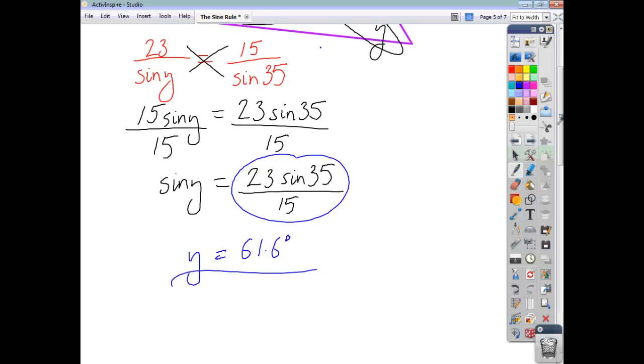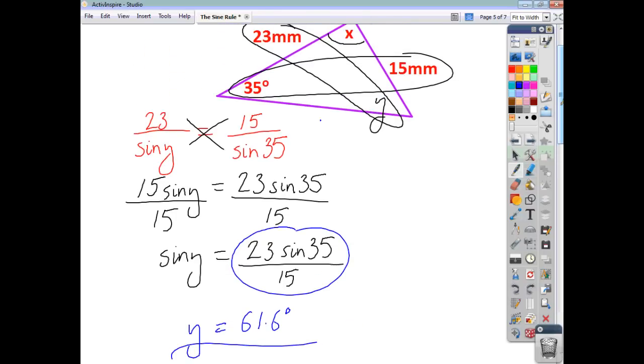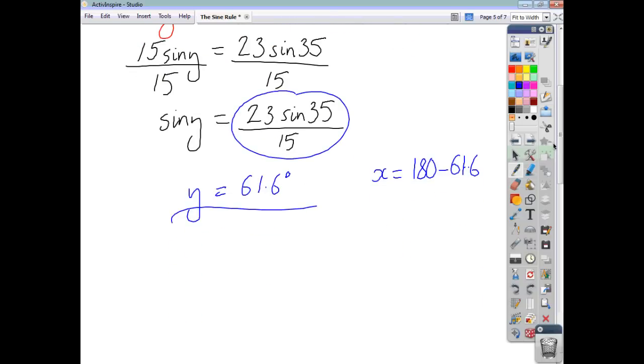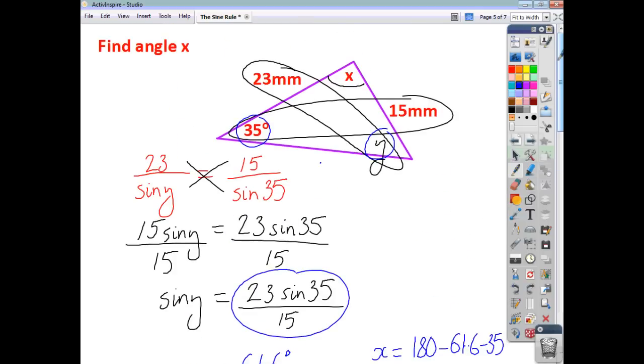Now that you know two of the angles, you know that this one is 35, you know that this is now 61.6, all you have to do to find angle x is just say, well, angle x is going to be 180 minus 61.6, and you also take away 35. And you end up with angle x being 83.4 degrees. So just be on the lookout for questions like that, where it might not be immediately obvious that it's a sine rule question.